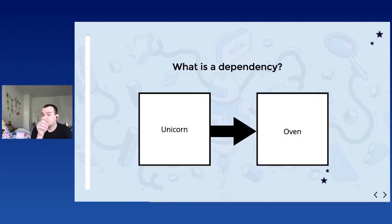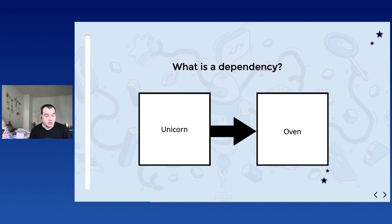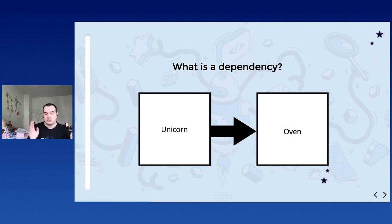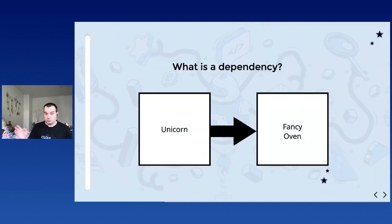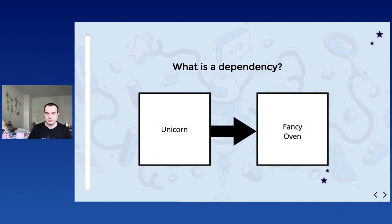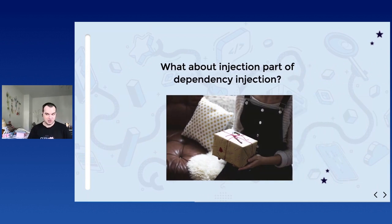One class uses another class. When the unicorn makes cupcakes, it uses the oven - in this case we can say that the unicorn class depends on the oven. Fairly simple - you're always going to have some class using another class and depending on it. In some cases you can use a fancy oven, and that's going to be another dependency. Nothing too scary. Now we're going to talk about dependency injection.